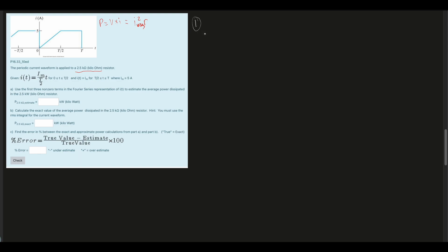First, we need to find A_V. Our period is between 0 and T. A_V is equal to 1 over T, integrated over the entire period. The equation changes halfway through, so we need to split this up. We're going from 0 to T/2 with I_max times 2t/T dt, plus from T/2 to T with I_max dt.